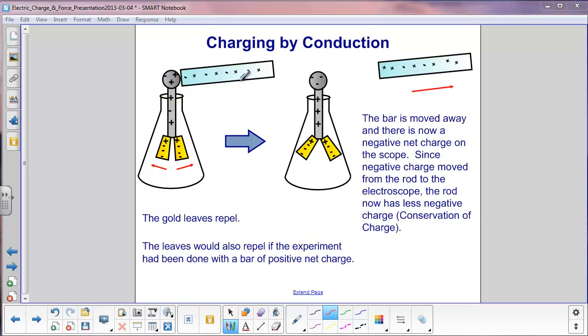The negatively charged rod is brought next to the electroscope, it touches the sphere. The extra negative charge spreads out down the rod and distributes itself equally amongst the two leaves. Since they both have a negative charge on them, they will repel each other and you can see how they've spread out here.